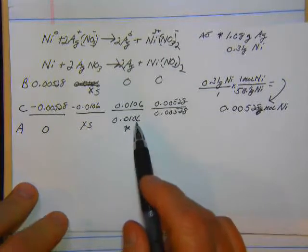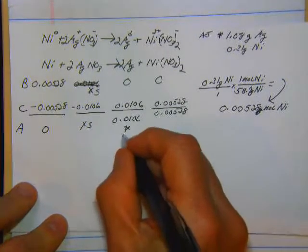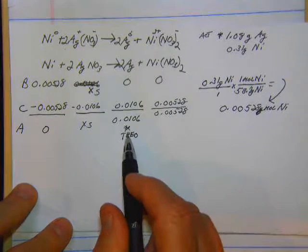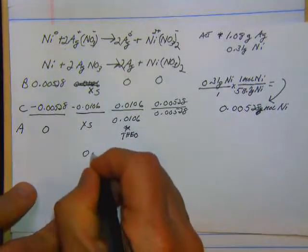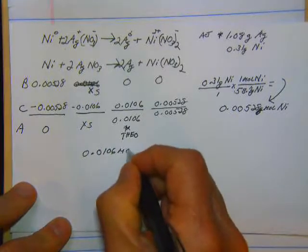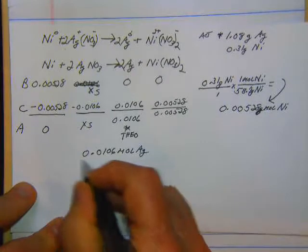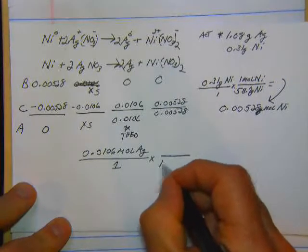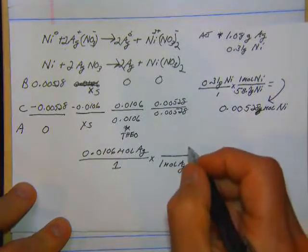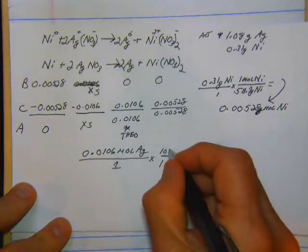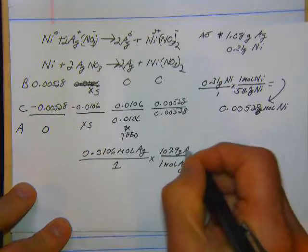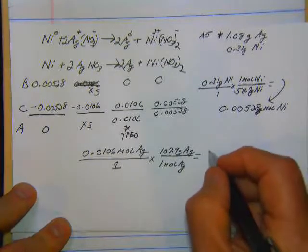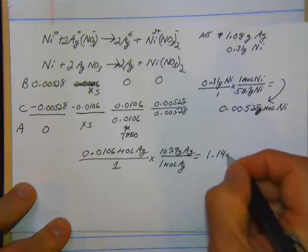So we've got the moles of silver. This is actually going to be our theoretical amount because this is what it should end up being. So we can take this value and convert it to grams. So 0.0106 moles of silver divided by 1 times 1 mole of silver is 107.9 grams of silver. So this is going to equal approximately 1.14 grams of silver. So this is our theoretical.